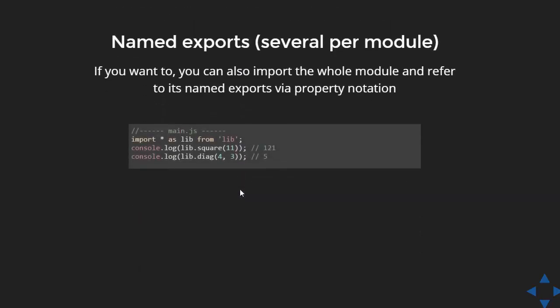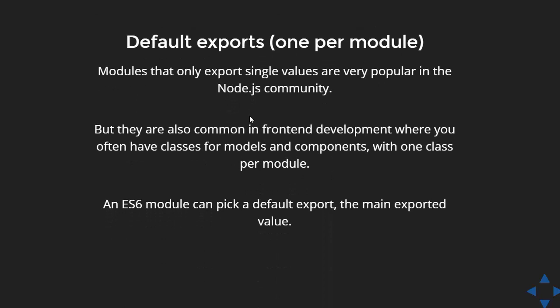With named exports, you can have several per module. Whenever you have multiple things in a file, you can export them all. Here we are importing everything from the module lib as an alias lib, so I will be accessing the methods using lib.square and lib.di.